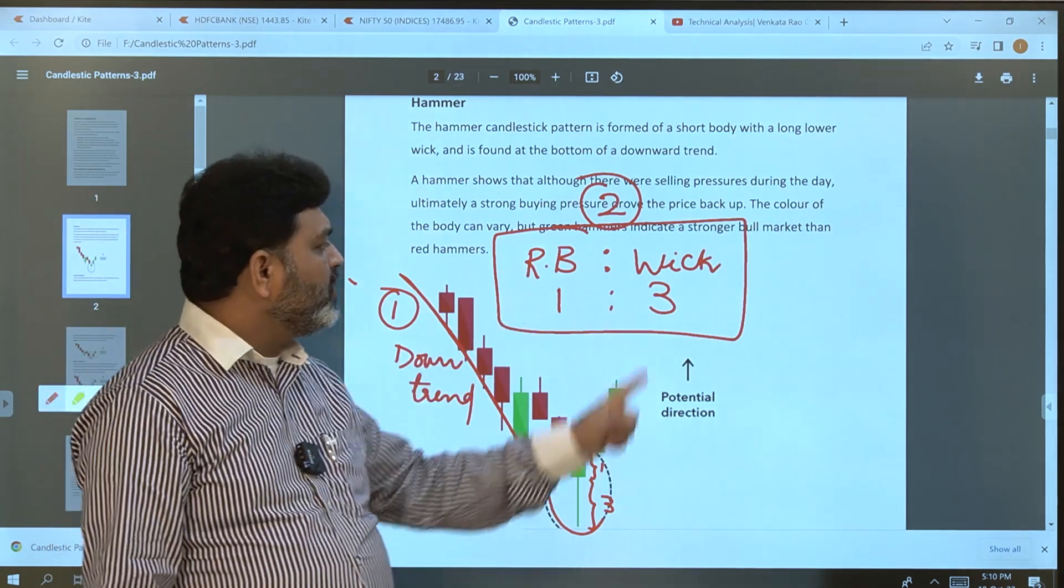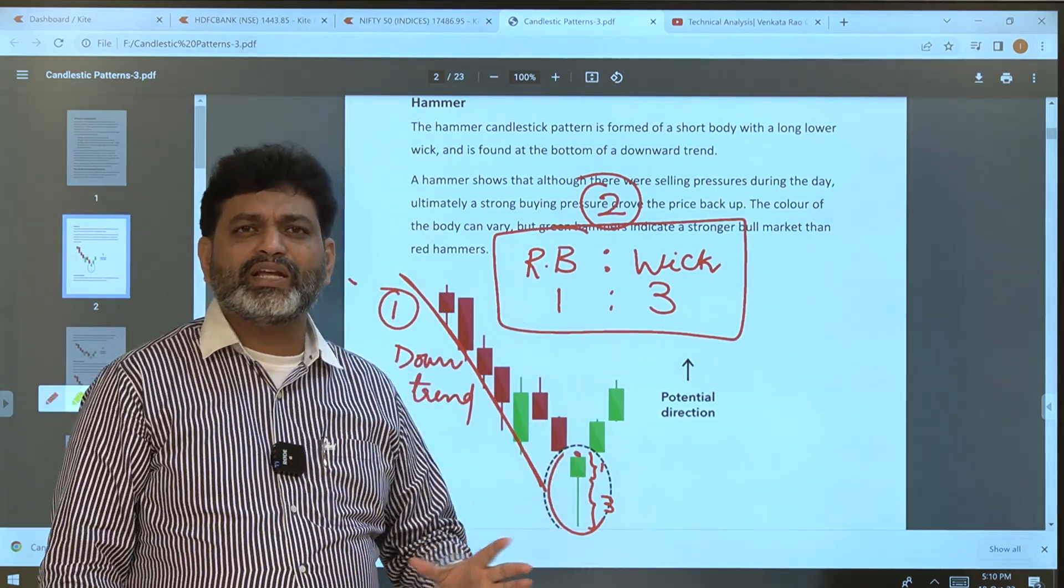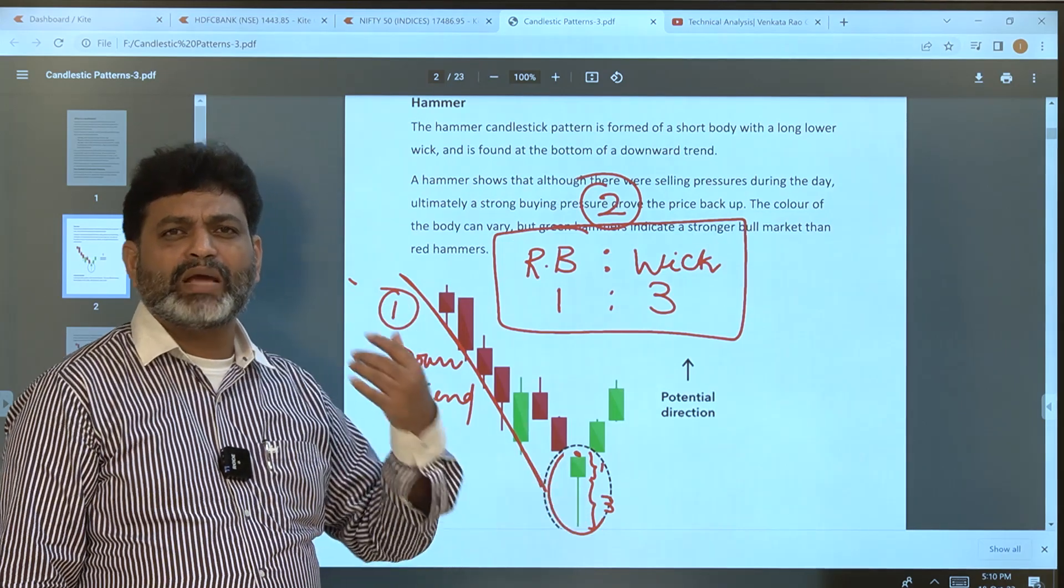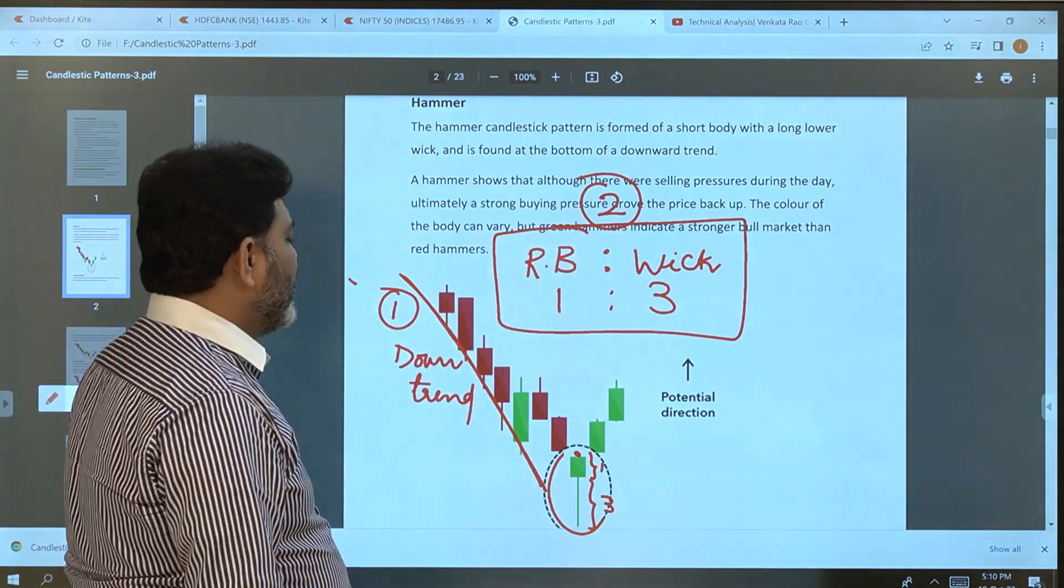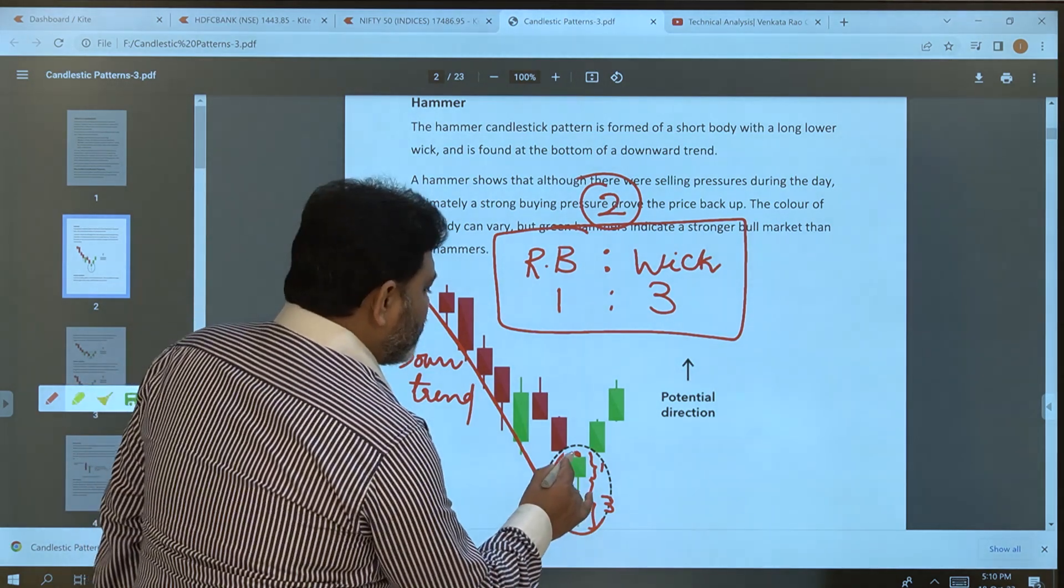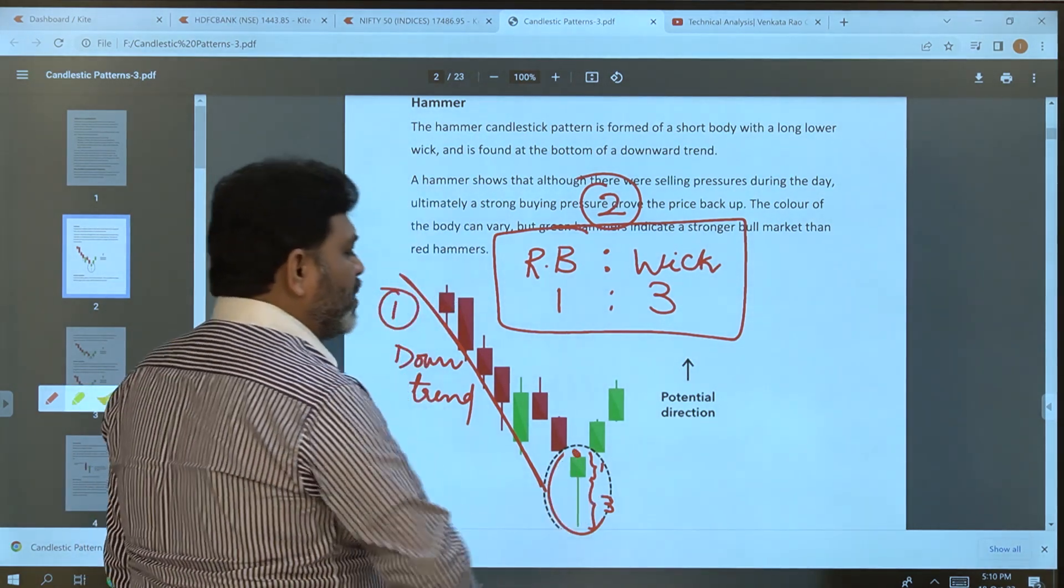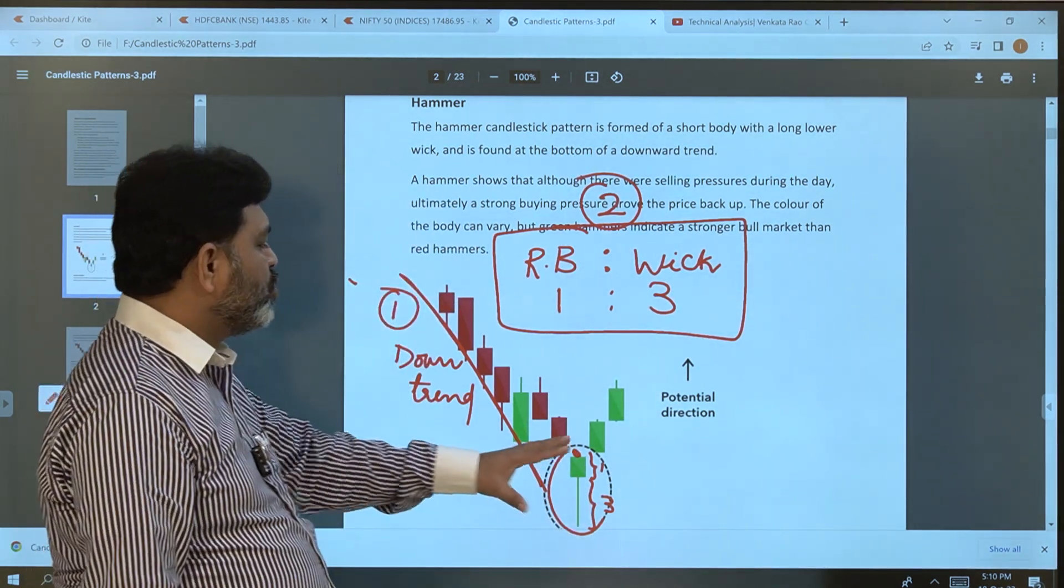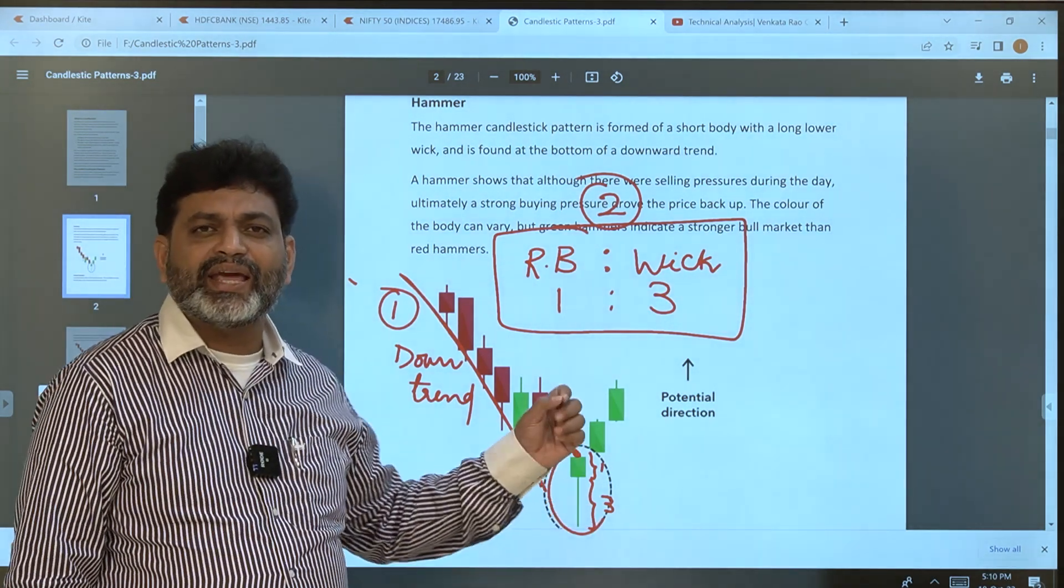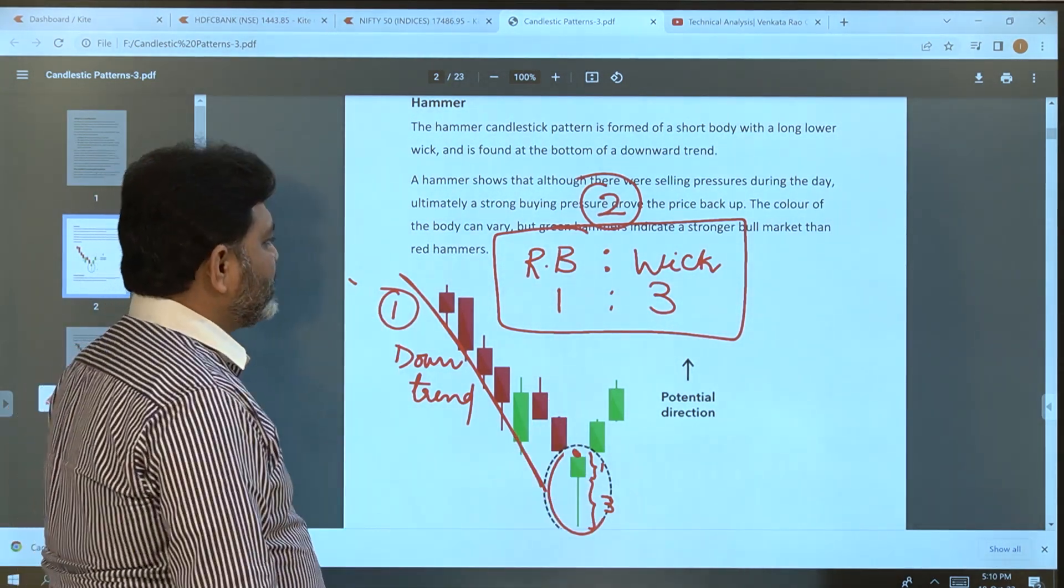The real body is one time, the wick is minimum three times. It can be more than that - four times, five times. This is the second requirement. The top wick should be negligible, can be absent or present, but if present it should be much smaller than the real body.